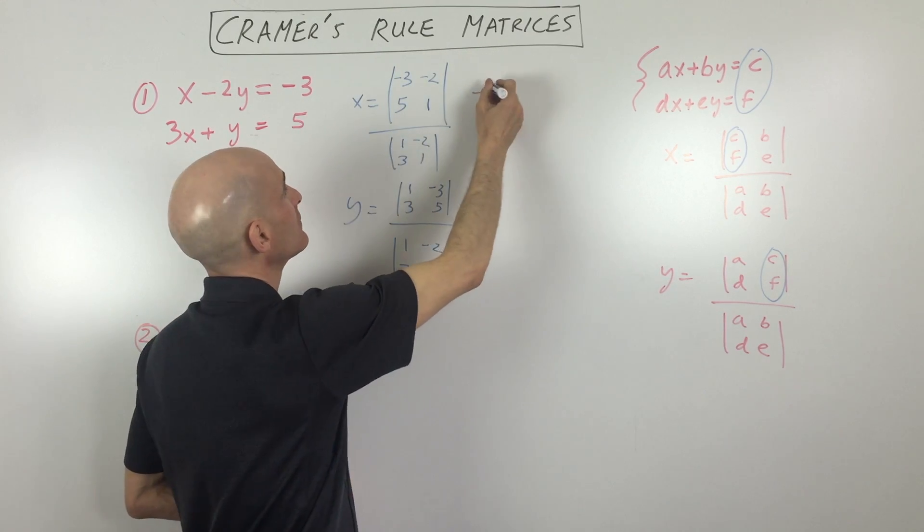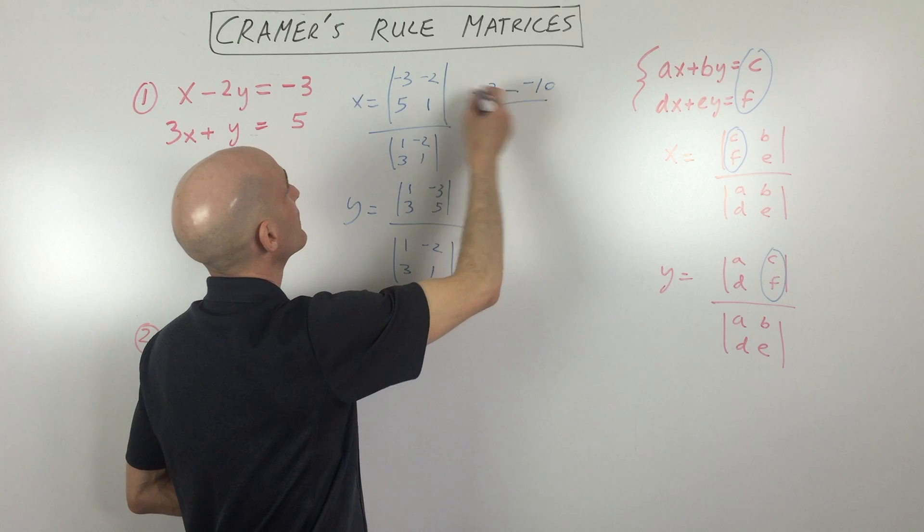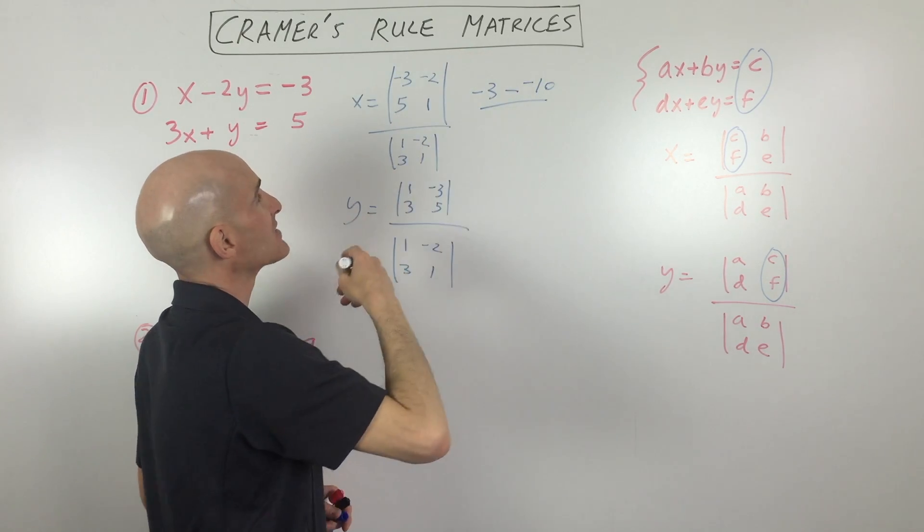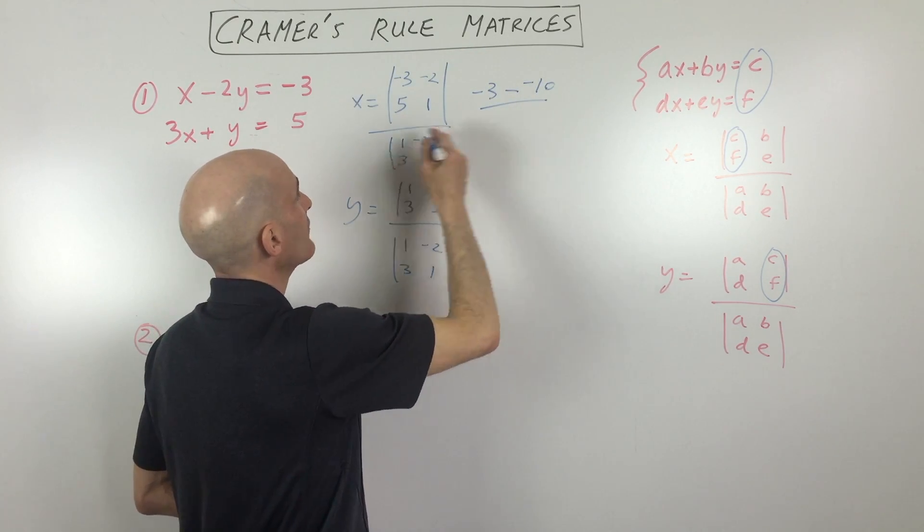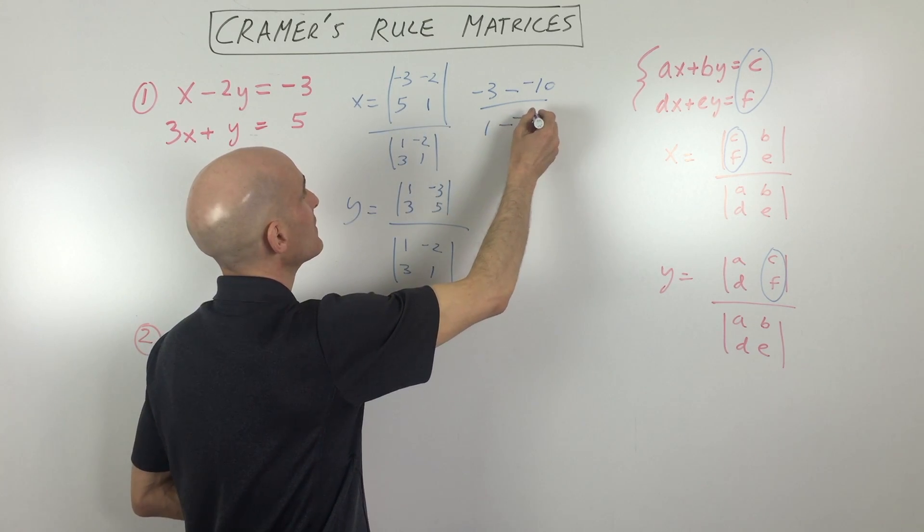So we've got negative three minus negative ten. So negative three minus negative ten divided by one minus negative six.